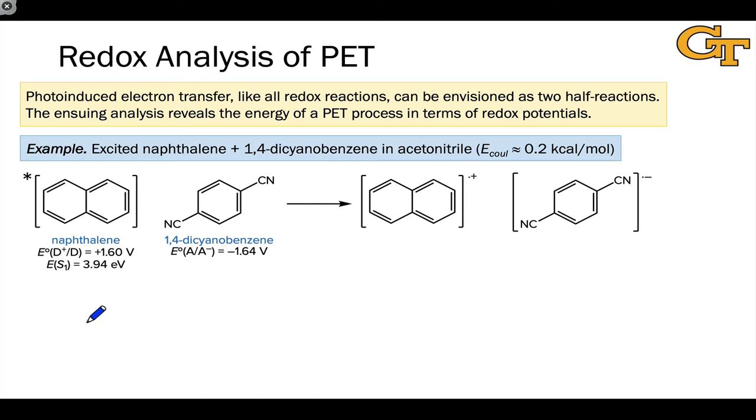Now let's work through a quick redox analysis of a photoinduced electron transfer process to calculate delta G for the process, the standard free energy change of the reaction, to determine whether it's thermodynamically favorable or not.